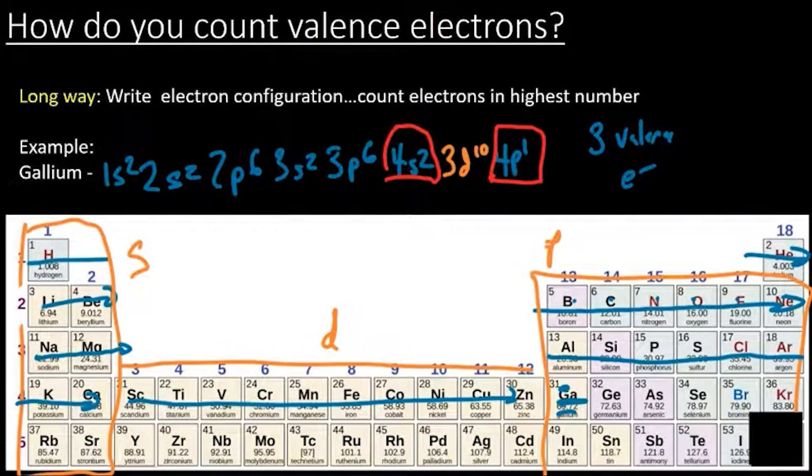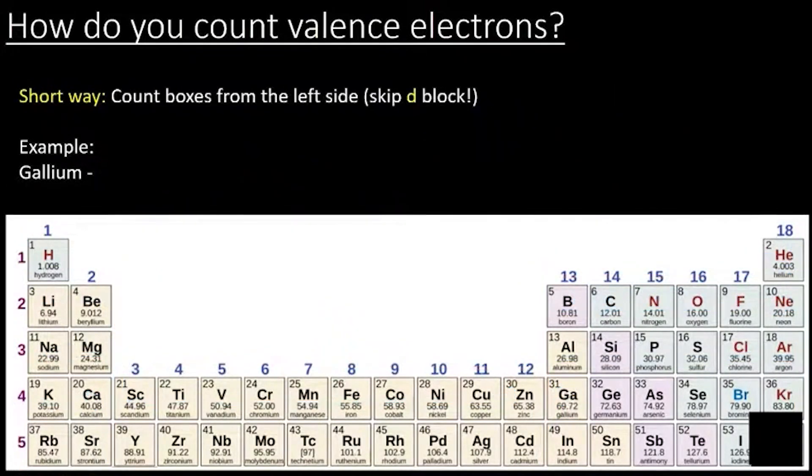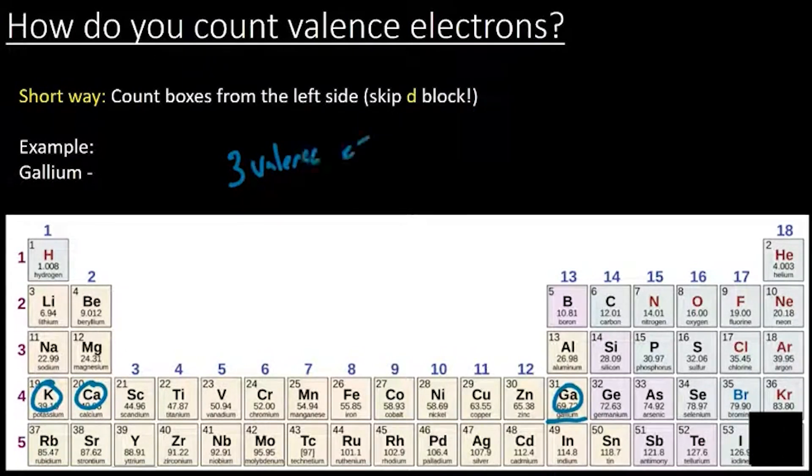And really tightly tied to the electron configurations, and that's why we go through that first. So let's do it the short way. All we do is we count the boxes from the left side of the periodic table, and we skip the d block. So we're trying to get to gallium, and we count 1, 2, 3. So there's 3 valence electrons. That was way easier. Now, I skipped this whole d block precisely because it has that lower number in front of it. It's 3. Those are actually core electrons. Okay, so that's how we count it quickly. Let's do a bunch of examples.